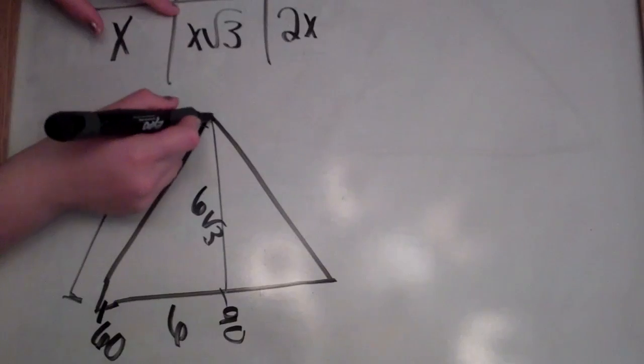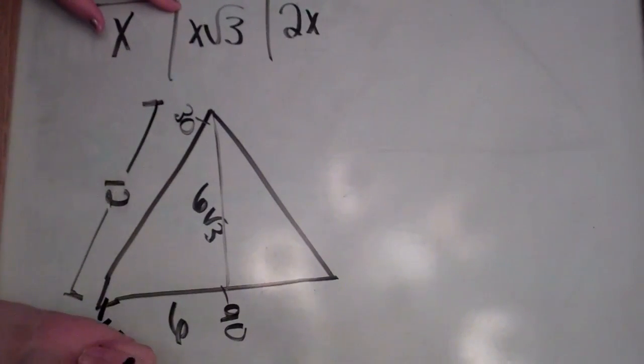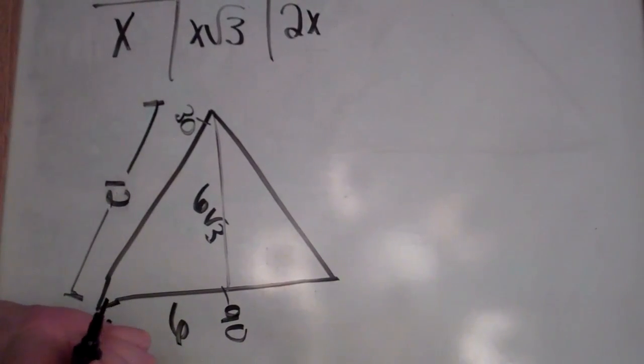Now you find your height, which is 6 square root of 3. Now you just plug it into your equation to find the answer.